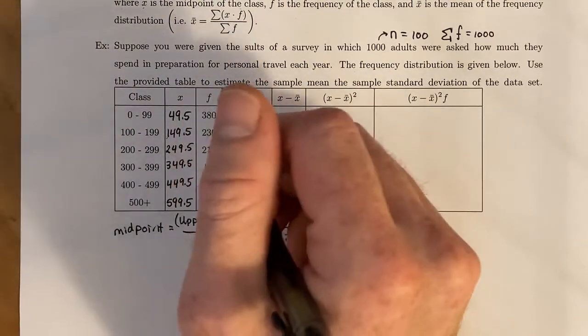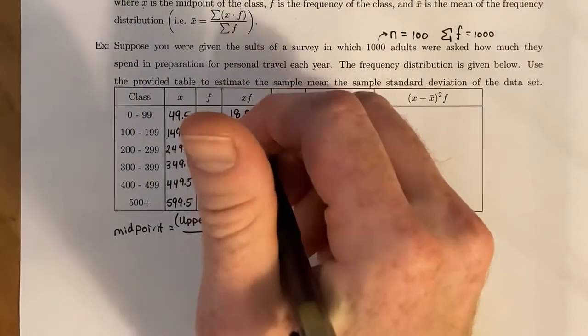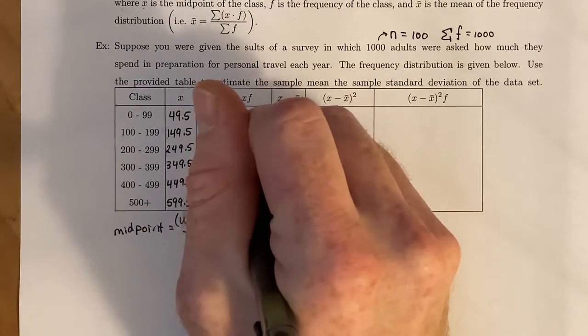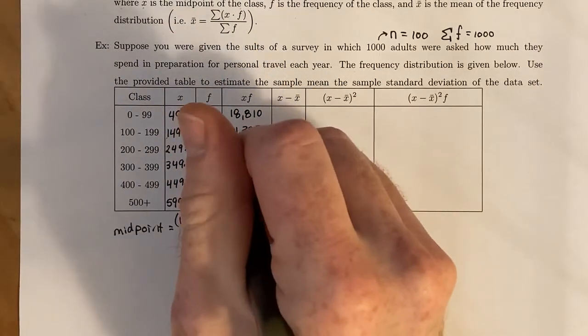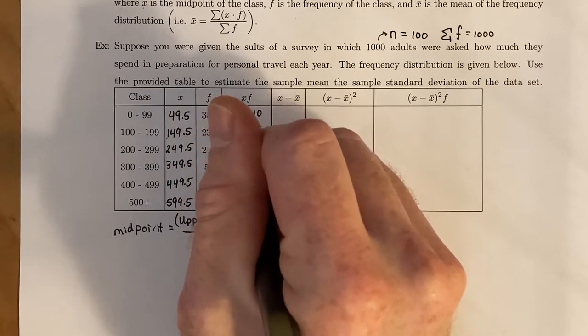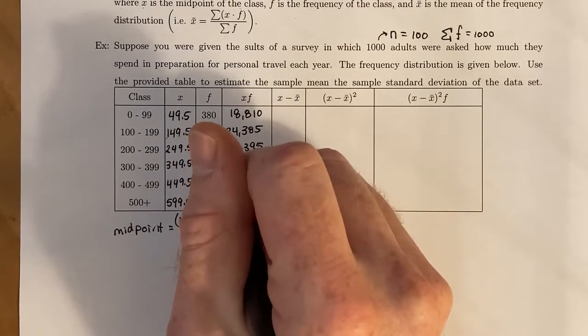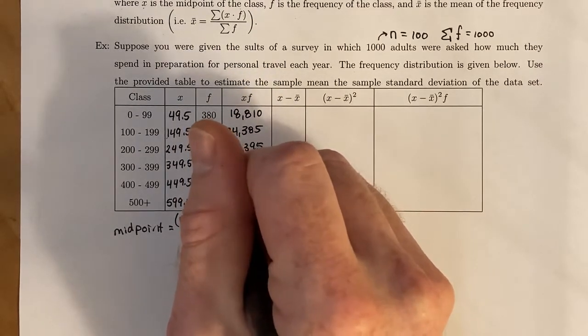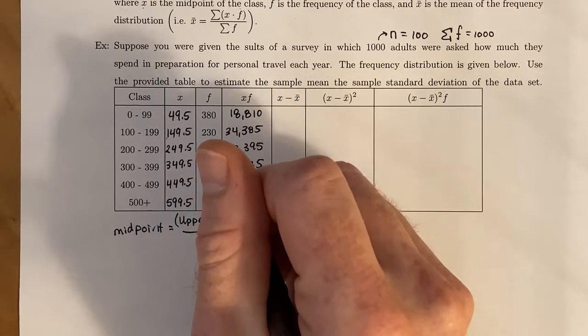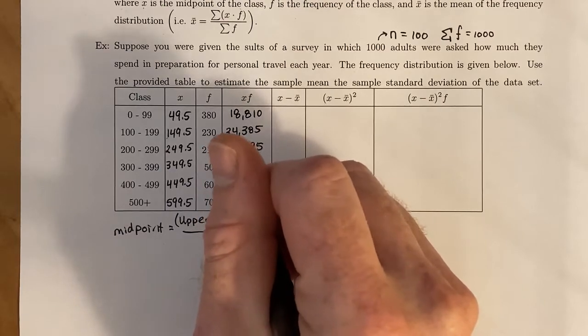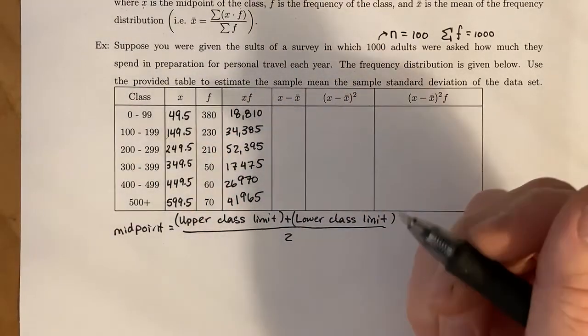We take 249.5 times 210, which gives us 52,395. The next one will be 17,475, then 26,970. And lastly, we have 41,965.